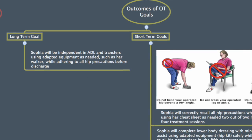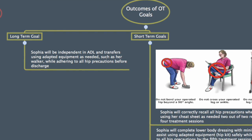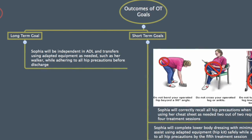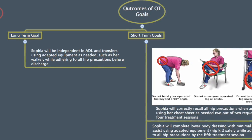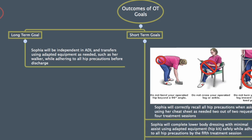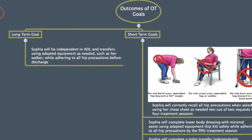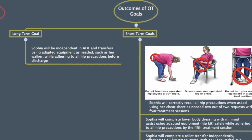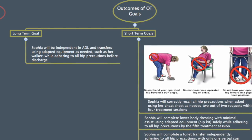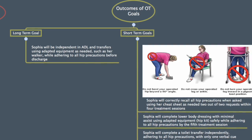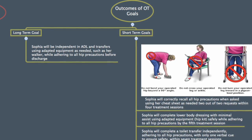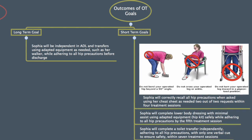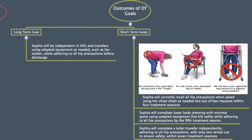While in inpatient rehab, Sophia's long-term goal is to be independent in ADL and transfers, using adaptive equipment as needed and adhering to all hip precautions before her discharge. Short-term goals include correctly recalling all hip precautions when asked by her fourth treatment session, completing lower body dressing with minimal assistance using adaptive equipment by her fifth treatment session, and completing a toilet transfer independently, adhering to all hip precautions with only one verbal cue for safety by her seventh treatment session.